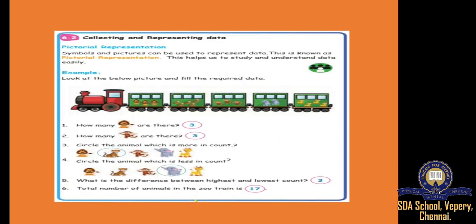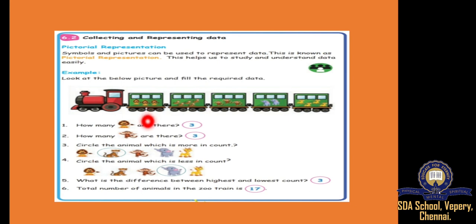Next one, we are collecting and representing data. Here one picture is there. In this session we will see different types of pictures. Seeing the pictures we have to answer the questions. See here — these are all lions. This is one big train. In the first one there are lions, next one tigers, next one monkeys, next is elephant, next is deer. Seeing this full pictorial representation — pictures — you have to answer.